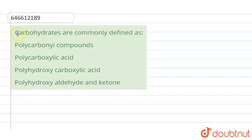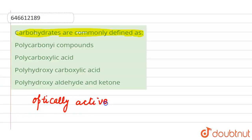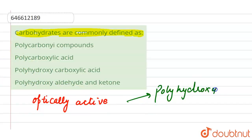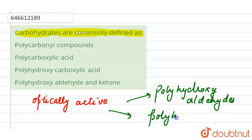The question is: carbohydrates are commonly defined as. Carbohydrates are defined as optically active polyhydroxy aldehydes or polyhydroxy ketones, according to the modern definition of carbohydrates.